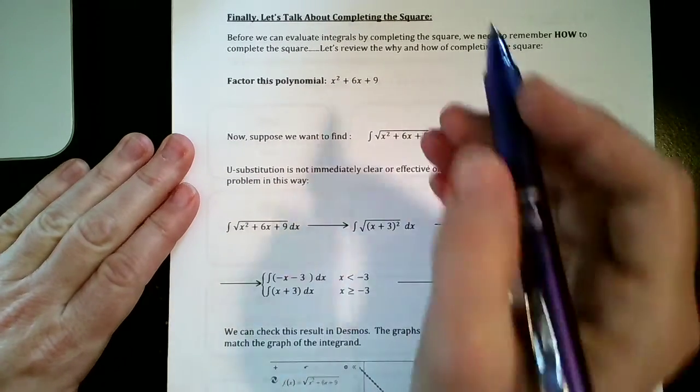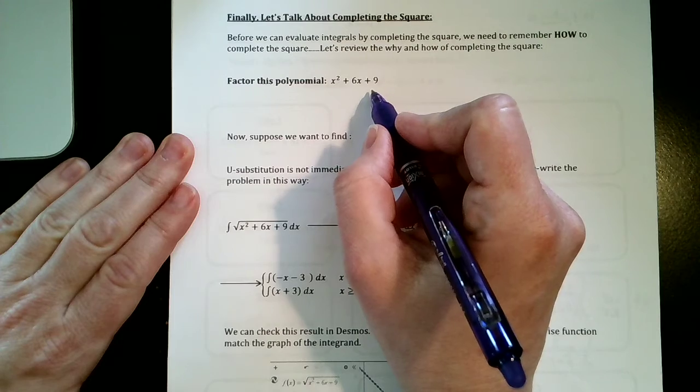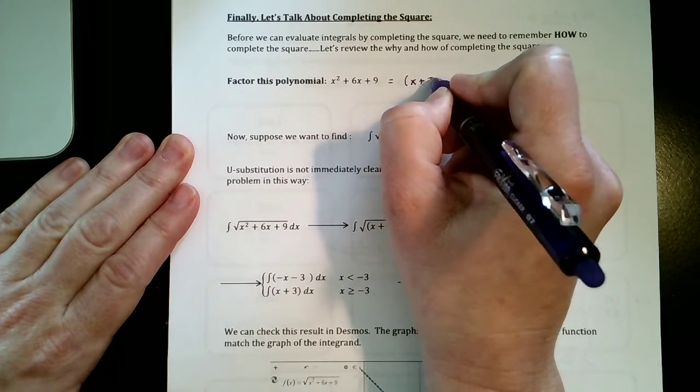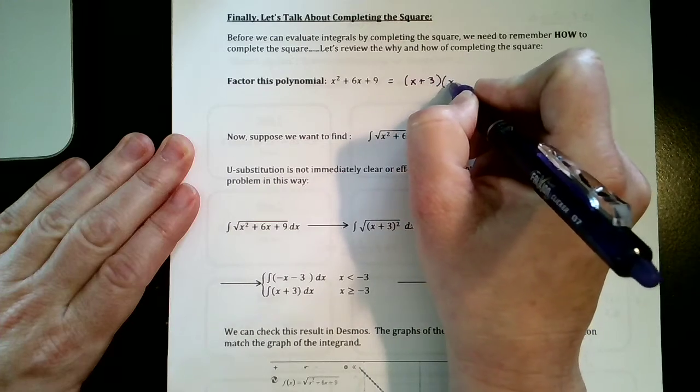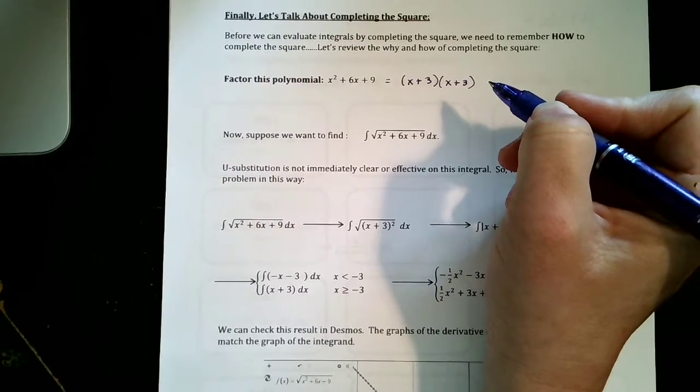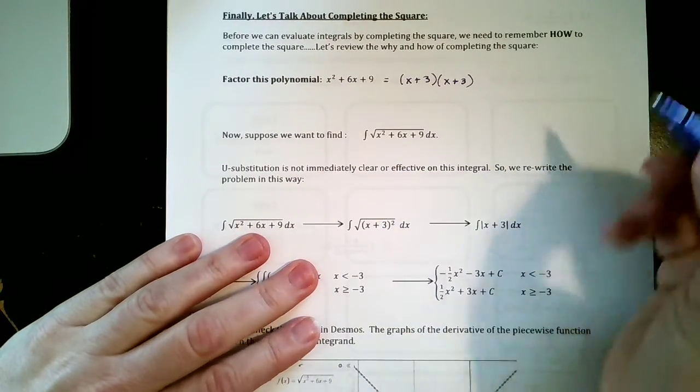The first thing I'm going to do is I'm going to factor x² + 6x + 9. Hopefully you are able to do that. That factors into (x + 3)(x + 3), and you can shorten this up to (x + 3)².